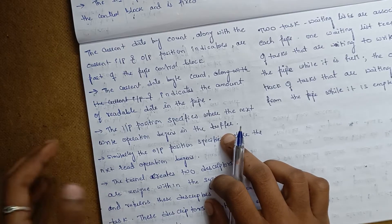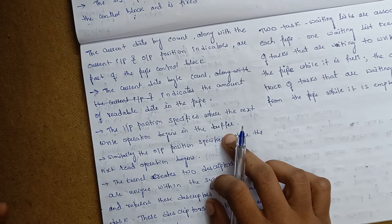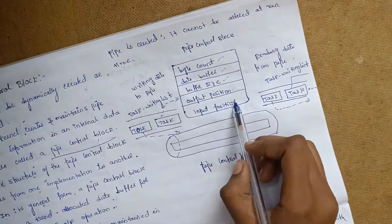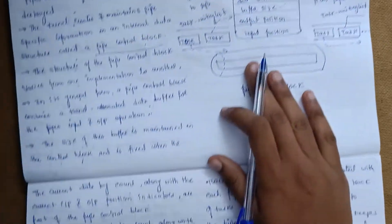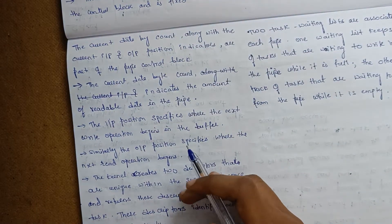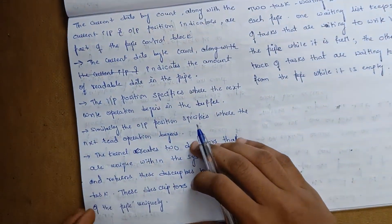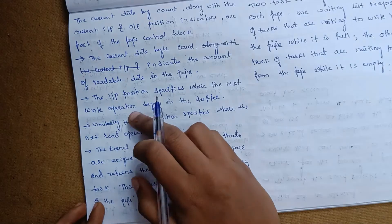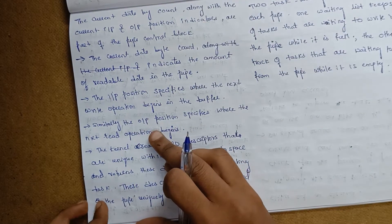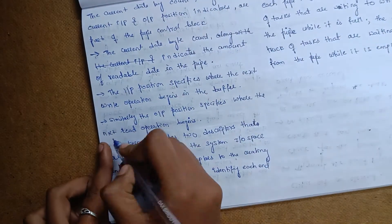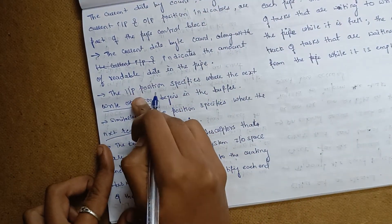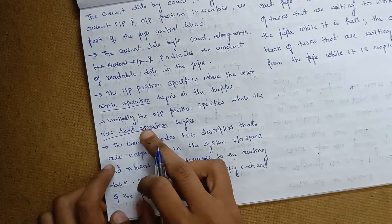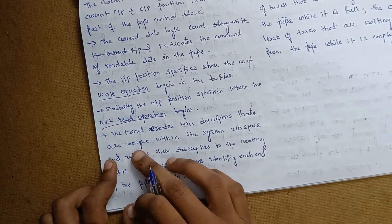The input position specifies where the next write operation begins in the buffer. We have a data buffer, and the input position indicates where the next write operation begins in the buffer.